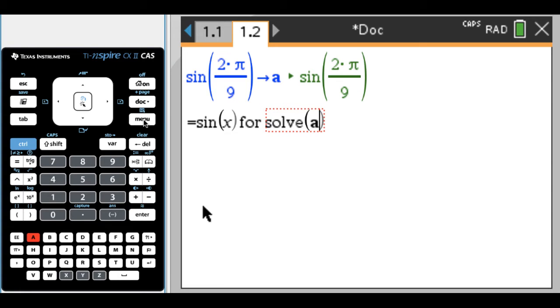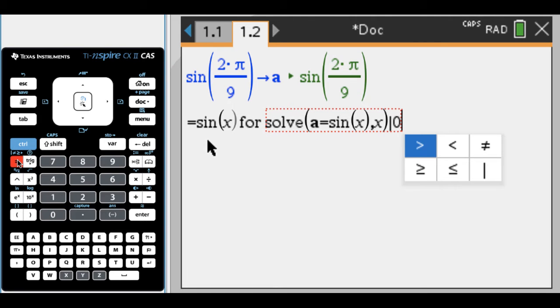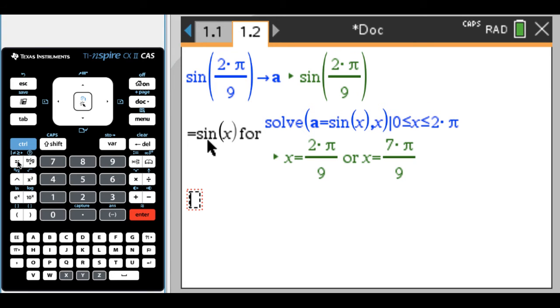So solve, I'm going to say A, which is what I stored up here. So A is equal to and then just sine of x, and then comma x. And then what I want to do is I only want to find the ones between 0 and 2 pi. So I'm going to do control equals and get such that. Zero, control equals, less than or equal to x, control equals, less than or equal to 2 pi. And I'm going to press enter, and it's going to immediately evaluate that.